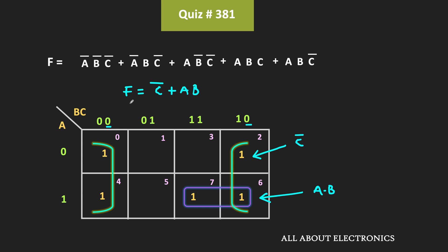This expression is still in the sum of product form. But if you carefully see, then using the distributive law, we can convert it into the product of sum form. We can write this expression as (c̄ + a)·(c̄ + b). So in this way, the expression is now in the product of sum form. However, every time it is not possible to use the distributive law.